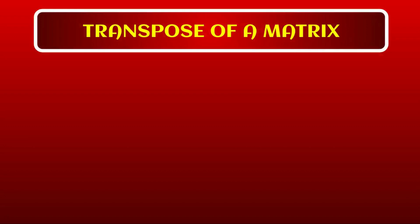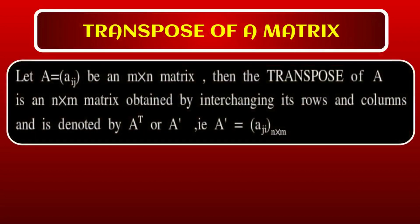If A = [a_ij] is an m×n matrix, then the transpose of this matrix is an n×m matrix obtained by interchanging its rows and columns. It is denoted by A^T, A transpose, or A'. The transpose is [a_ji] of order n×m.